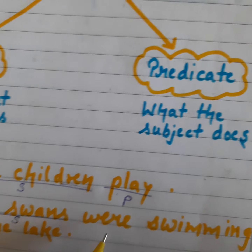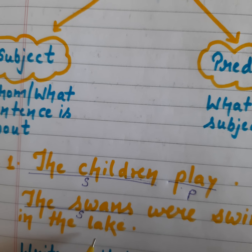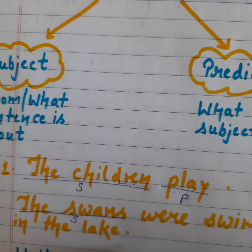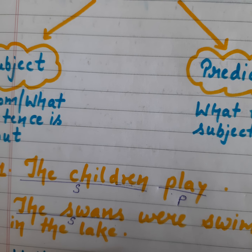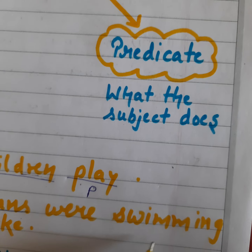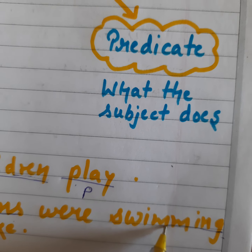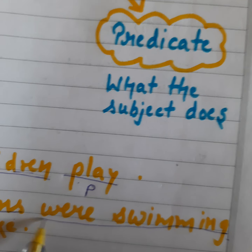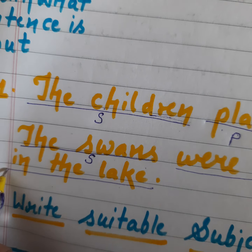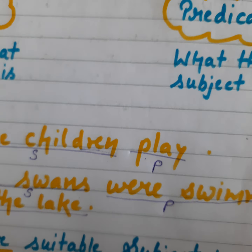And what are they doing? They were swimming in the lake. That is the part of the sentence telling us what the subject is doing — they were swimming in the lake — so the remaining part is the predicate.